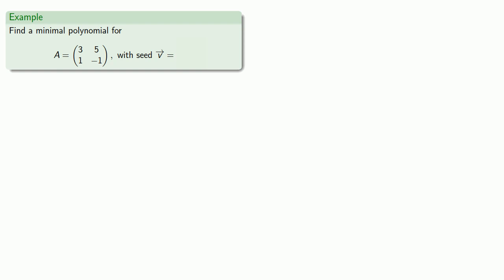So, for example, let's find a minimal polynomial for this matrix with a seed vector, oh, I don't know, how about 1, 0? So, we'll find our vectors. V is just our seed vector, 1, 0.